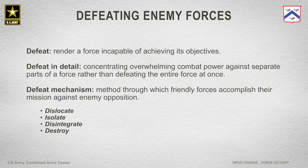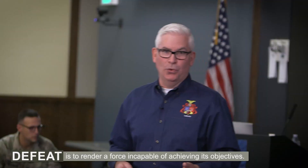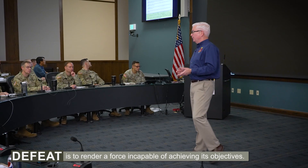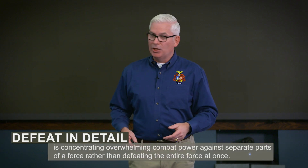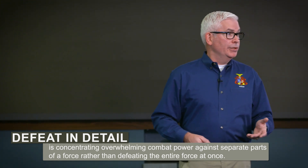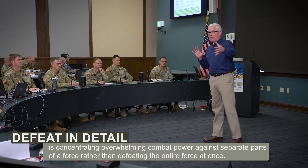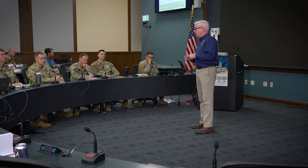A few key definitions people throw around need clarification. Defeat is possible without destroying the entirety of the enemy — you can defeat an adversary during crisis simply by causing them to rethink and change their mind about further aggression. Defeat in detail is similar to eating the elephant one bite at a time. Against two evenly matched enemies, you won't defeat them in a single battle or even a campaign, but you can defeat pieces of them simultaneously in different places, accruing advantage over time and creating more dilemmas for the threat. We'll return to defeat in detail when we talk about convergence.